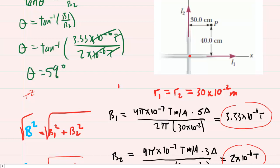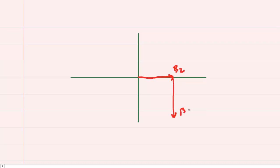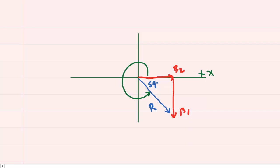If your homework system wants this angle measured counterclockwise from the positive x-axis, we need to be careful. B2 was pointing in the positive x direction and B1 was pointing straight down, with the resultant drawn accordingly. We found this angle to be 59 degrees, but the angle measured counterclockwise from the positive x-axis is actually 360 minus 59, which gives 301 degrees as the final angle.